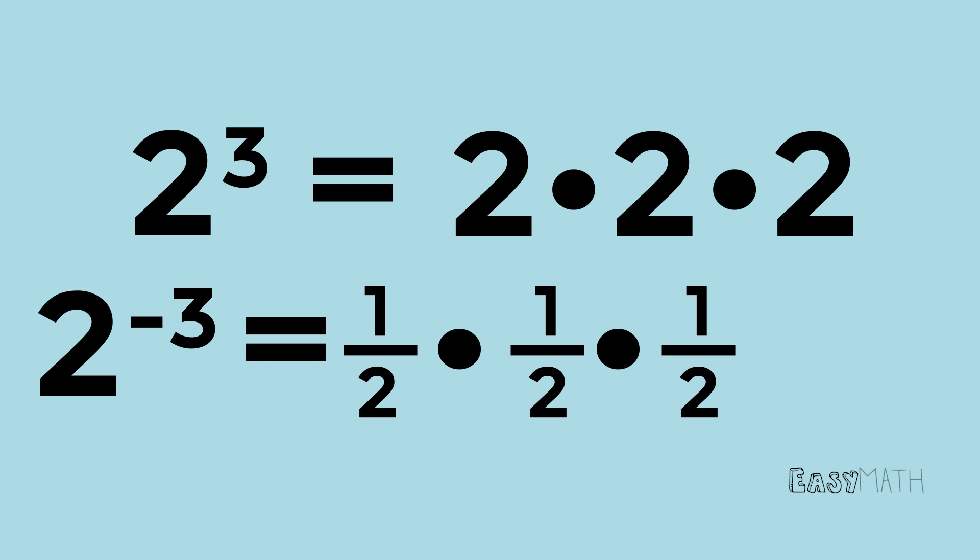Another way to deal with negatives is to notice that 2 to the negative third is equal to 1 over 2 raised to the third. This is helpful if you need to switch from negative to positive exponents while simplifying.